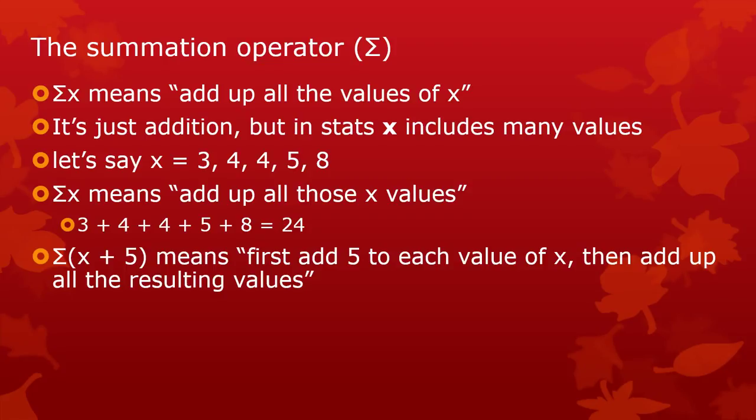The sum of quantity x plus 5, or Σ(x + 5), means first you add up what's going on inside the parentheses. And when you have multiple numbers, that means do it for every single value. You're going to have the sum of 3 plus 5, and 4 plus 5, and 4 plus 5, and 5 plus 5, and 8 plus 5. So each x value gets added to 5. Then, after you get all that done, then you add them all up. And so in this case, the sum of x plus 5 is 49.